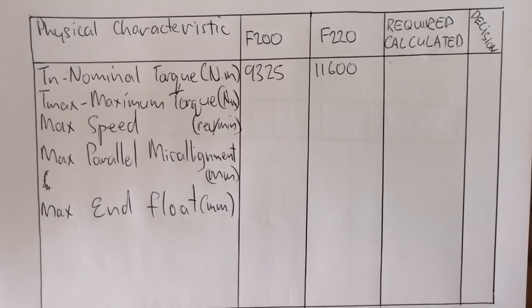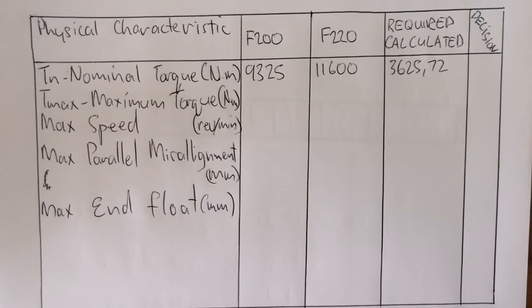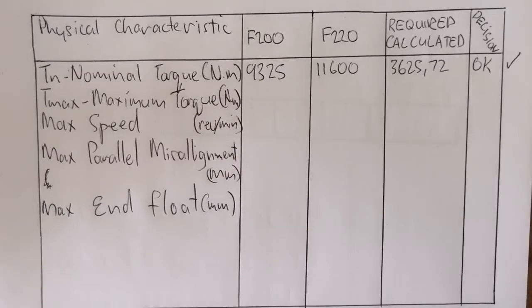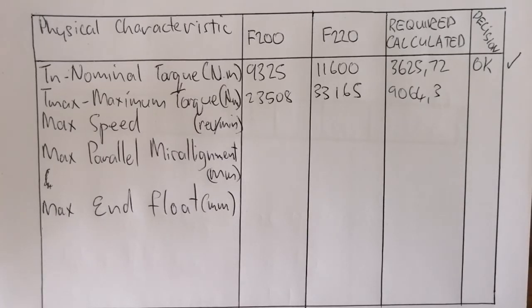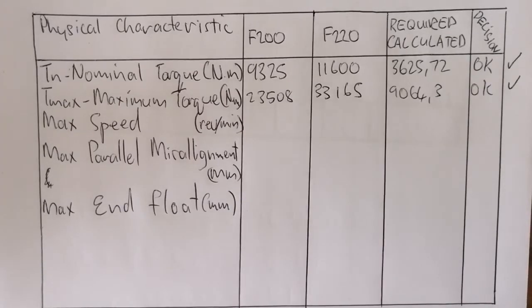There's the nominal torque for both F200 and F220. What have we calculated? 3625.72 newton meters. Is this okay or not? Since both can handle higher than the calculated or required, we write down okay. Next is the maximum torque - our calculated was 9064.3. The manufacturer gives that their couplings can handle 23,508 for the F220 and 33,165 for the F200. So we are happy with that result - okay.